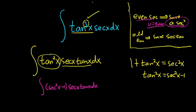If you have an odd tangent, you save a secant tangent. So we did that. So if we're saving a secant tangent, it must mean that u is going to be secant. So we turn this into secants. And so now we'll do it. We'll let u be secant.